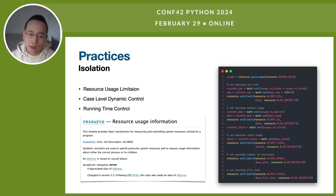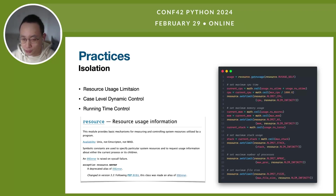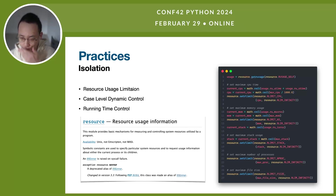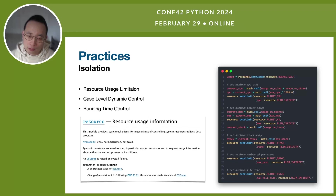When talking about isolation, we have to satisfy three key points. The first is limiting resource usage. As you can see in the screenshot on the slide, we use the built-in Python package `resource` to achieve this goal. The underlying mechanism is the `setrlimit` API in the Linux kernel, which can be used to specify particular system resources and to request usage information about either the current process or its children.